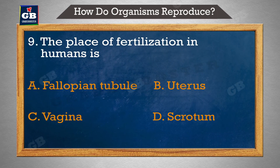The place of fertilization in humans is — manushyon mein fertilization ki jagah hai. A. Fallopian tube, B. Uterus, C. Vagina, D. Scrotum.